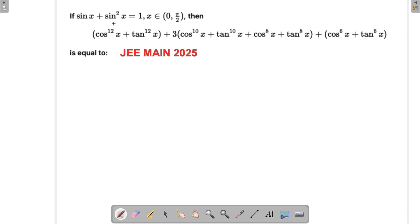So very first thing, let's try simplifying what's given to us. We've got sin x plus sin square x equals to 1, or we can say sin x equals to 1 minus sin square x, or we can call it cos square x as well.